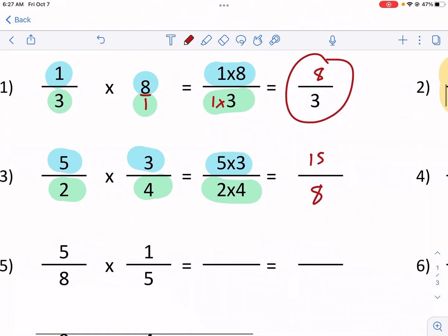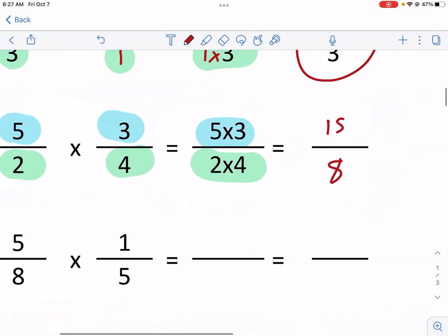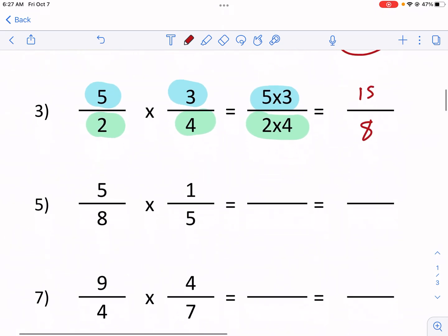And it can't be reduced because notice how we don't have any matching numbers. We have five and three in the top, two and four on the bottom, and none of those have common factors. So it's going to stay 15 over eight as its most reduced form.